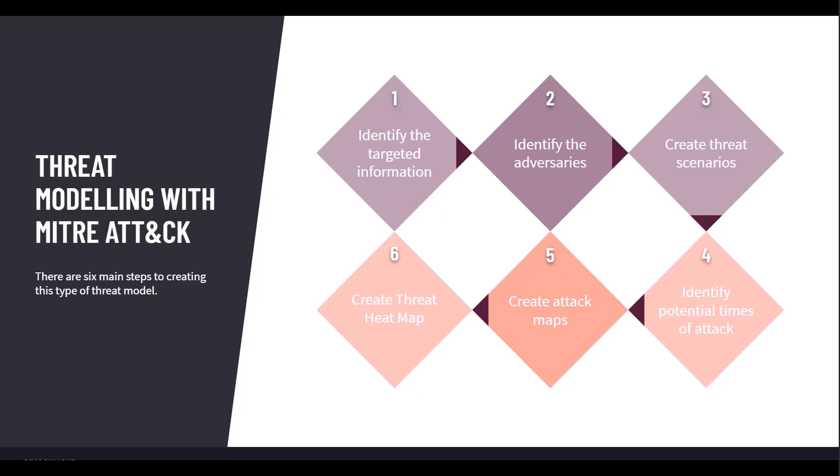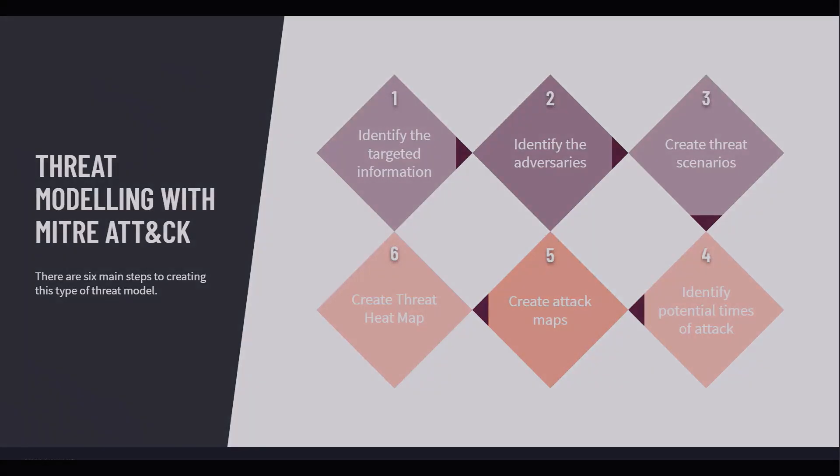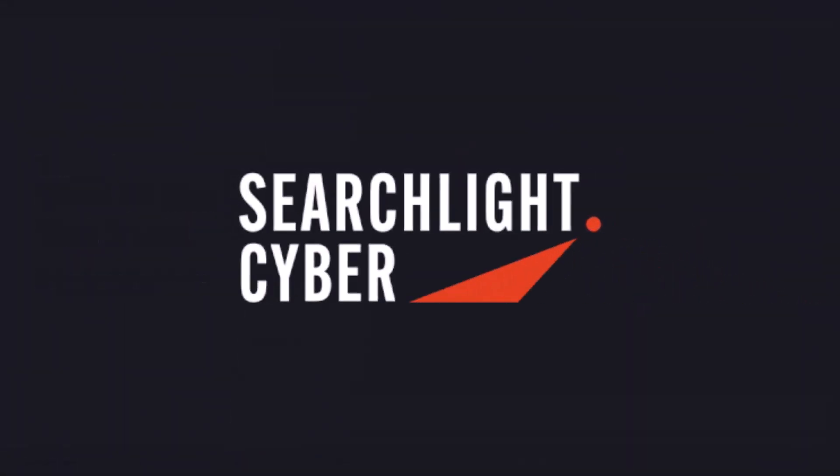Bringing it all together, you get a MITRE matrix heat map displayed in a traffic light system with all those threat levels shown. Red TTPs are your priority and you can start to work through them. The whole model is just easier to consume — you've got the action points, the top five TTPs, malwares, and threat actors, so it just makes life a little bit easier.